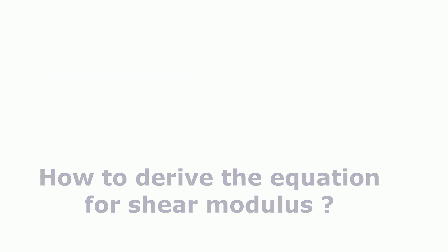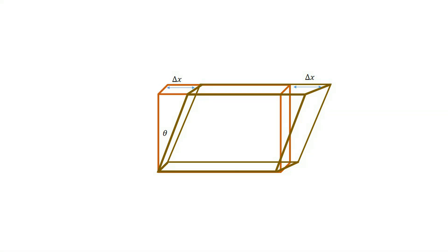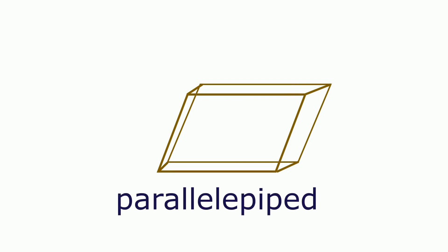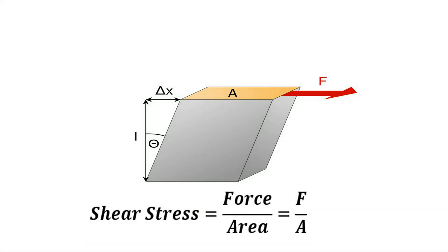Let's consider a box having length L, with one side fixed. When we apply a deforming force F parallel to one of its surfaces while the opposite face is fixed, it will deform into a parallelogram shape. In this situation, the shear stress will be equal to the force divided by the area, where the force acts on one face of the structure.